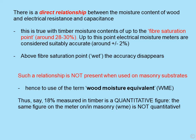It must also be appreciated that using a moisture meter, there is no such relationship when used on masonry substrates — hence the term 'wood moisture equivalent'. 18% measured in timber is a quantitative objective figure, but the same figure measured in or on masonry as wood moisture equivalent is not quantitative. What one must remember, as shown in earlier modules, is that it's the pattern of readings that's important when these meters are used on masonry, not the actual figure.